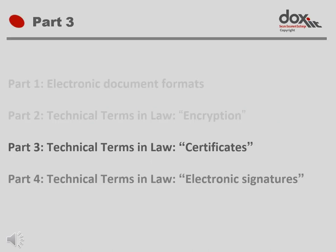Part 1 was a very basic look at electronic document formats and the benefits and pitfalls of working with electronic documents. In Part 2 we discussed encryption, what it is and why we can trust it and what it can be used for. In Part 3, this video, we discussed what a certificate is and how the issuing of certificates is regulated by the ECT Act.